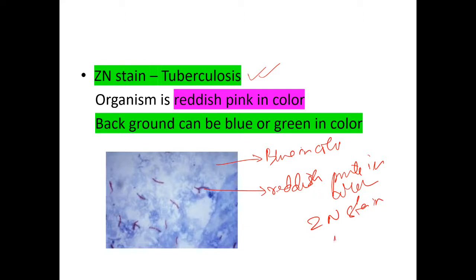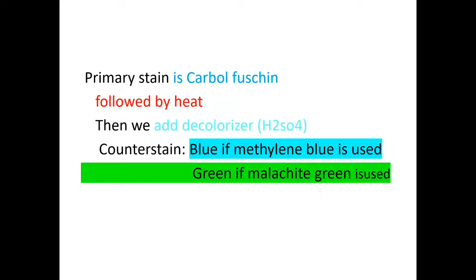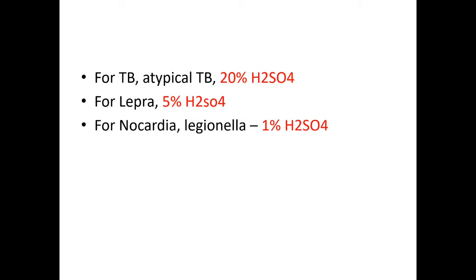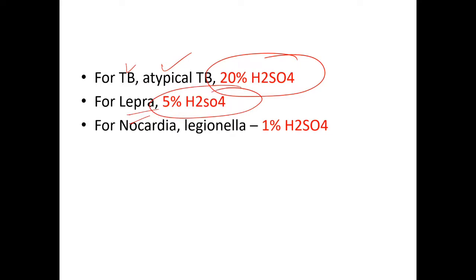The primary stain used is carbol fuchsin, followed by heating. Then we add the decolorizer, which is H₂SO₄ (sulfuric acid). The counter stain is methylene blue or malachite green. Regarding the percentage of sulfuric acid used: 20% H₂SO₄ for typical and atypical tubercle bacilli, 5% H₂SO₄ for lepra bacilli, and 1% sulfuric acid for Nocardia and Legionella.